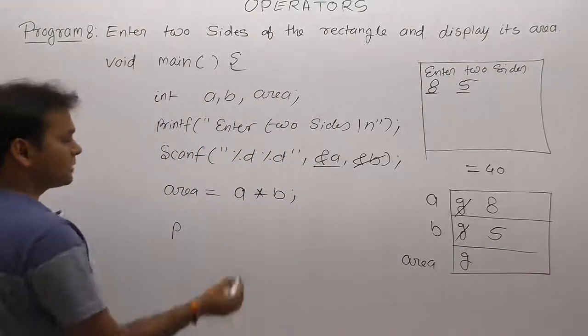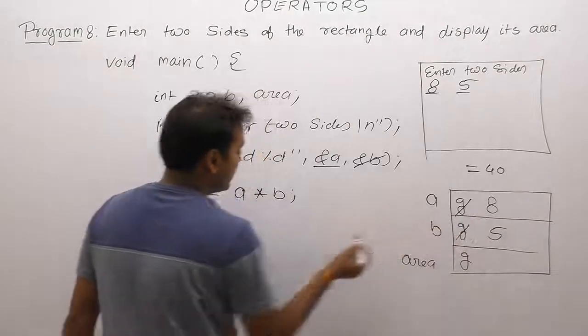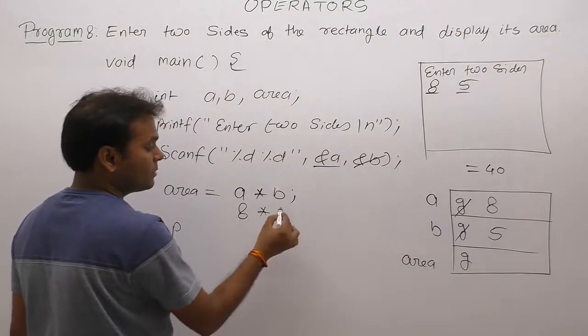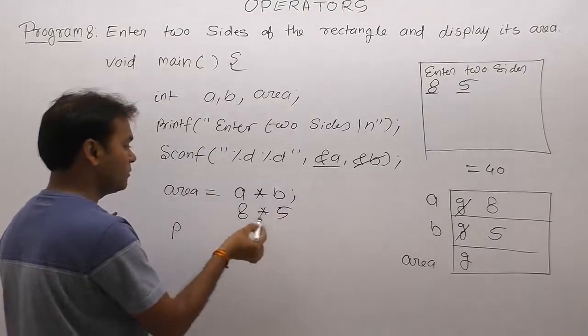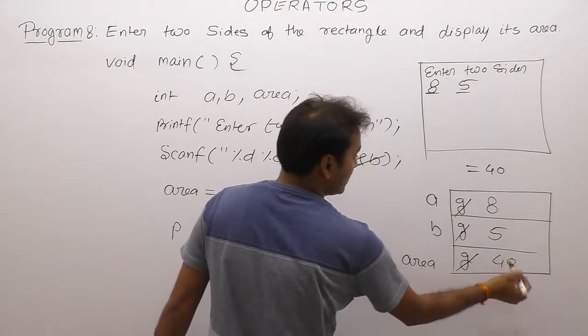Then finally solving this expression. A is five, sorry, according to diagram what is the value of A is eight. Multiply value of B is five. Eight multiply five becomes forty. Forty is assigned to the variable called as area.